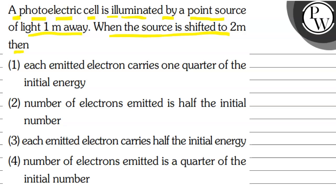then number 1, each emitted electron carries 1 quarter of the initial energy. Second, number of electrons emitted is half the initial number. Third, each emitted electron carries half the initial energy. Fourth, number of electrons emitted is a quarter of the initial number.